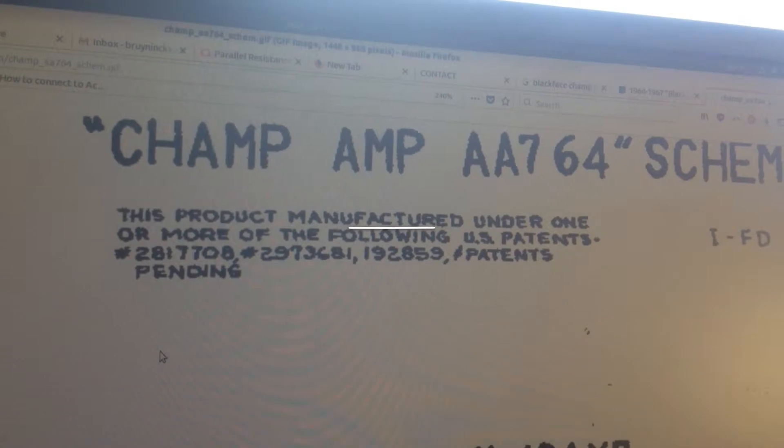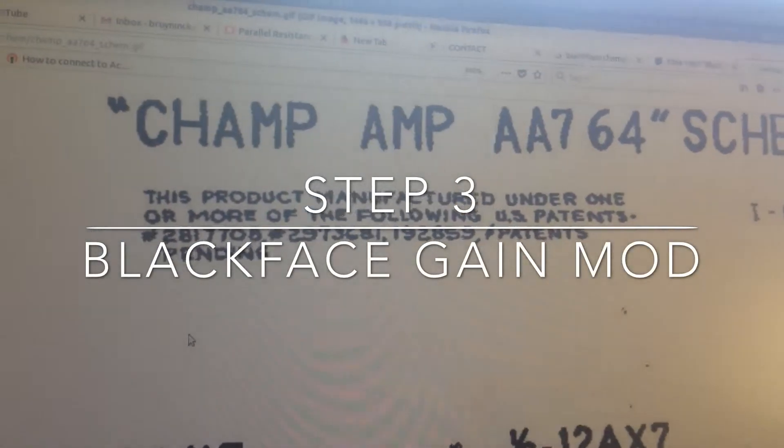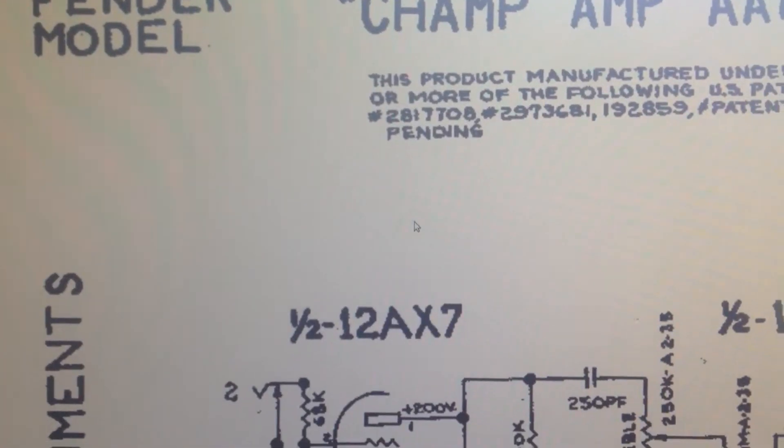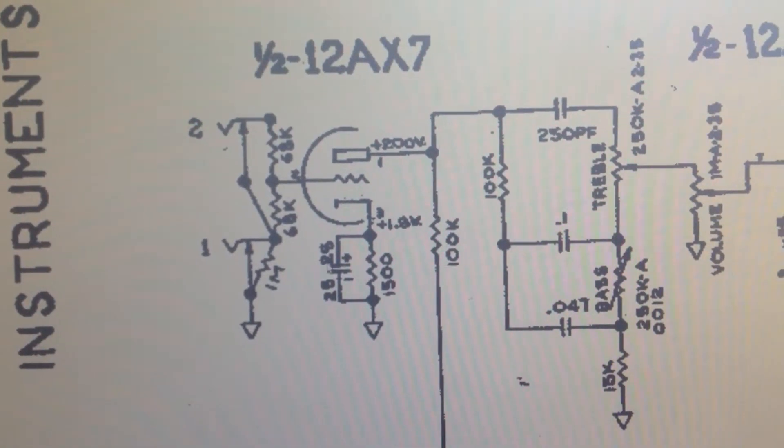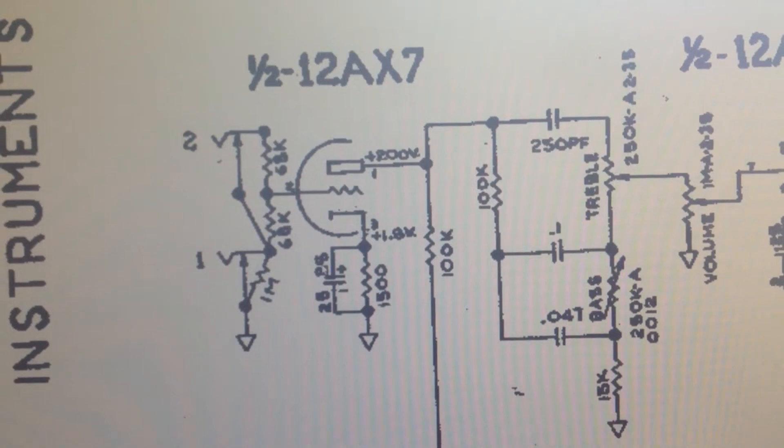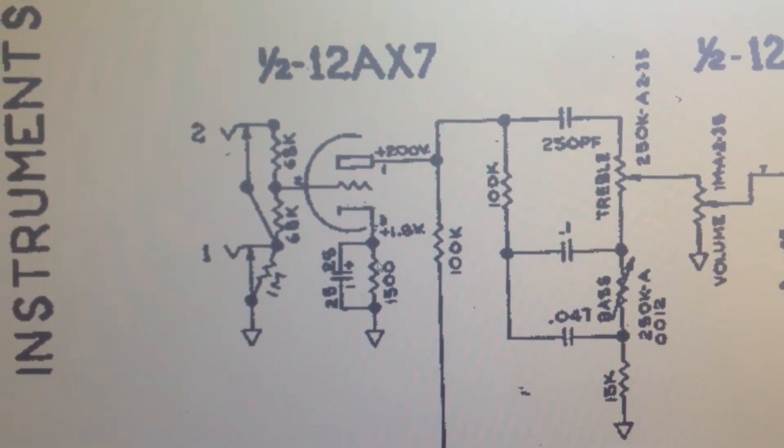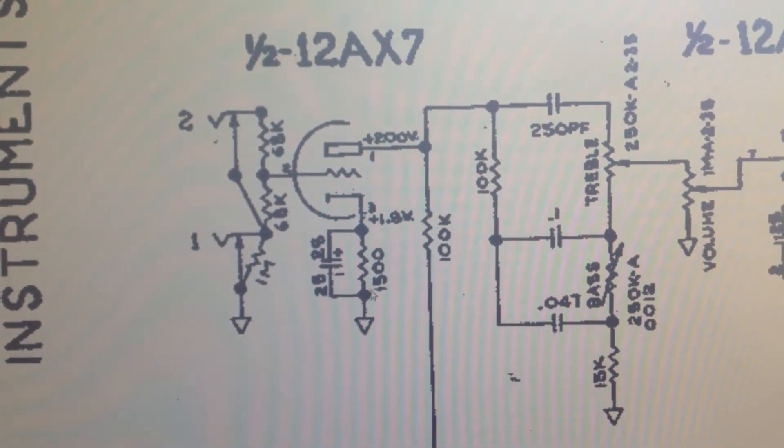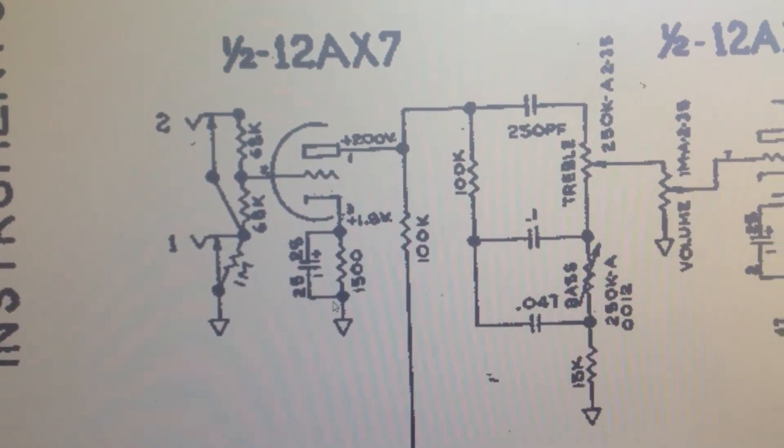I wanted to try one more experiment and that is to make a change that is taken from the Blackface Champ schematic, which basically is almost the same except for this capacitor strapped around the cathode resistor on the first pre-amp tube. I'm going to put that in. The Tweed Champ only has this 1500 ohms resistor to ground and is missing the 25 microfarad cap. I only have like a 400 volt but that doesn't matter.